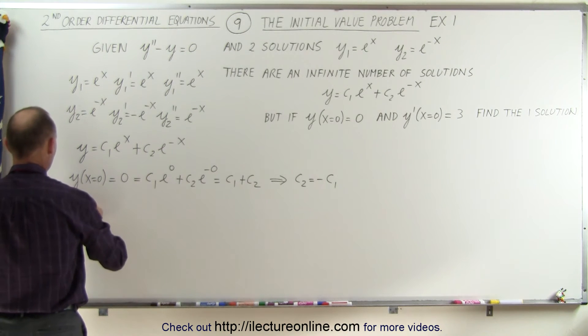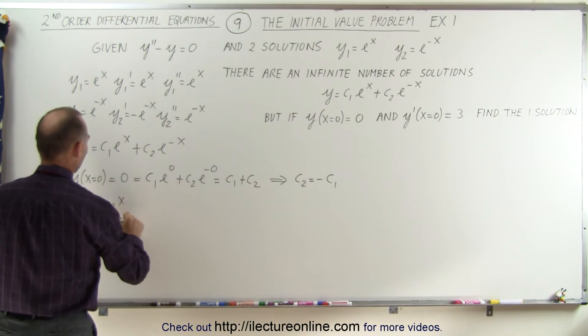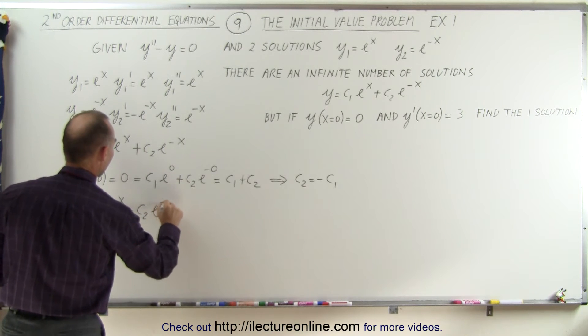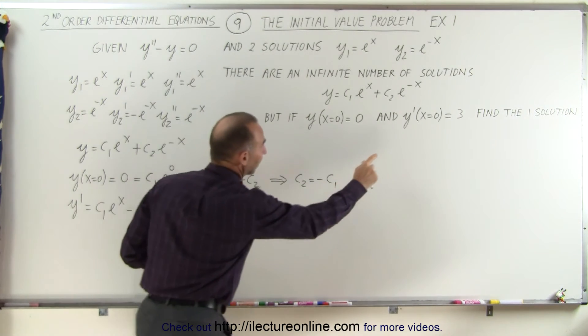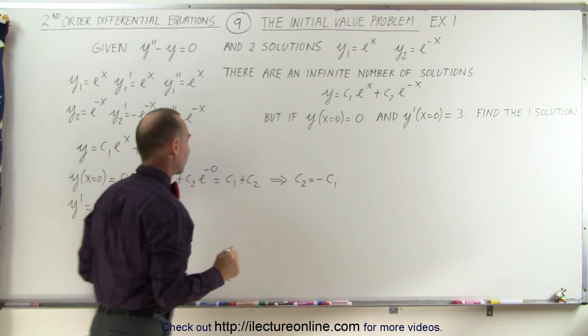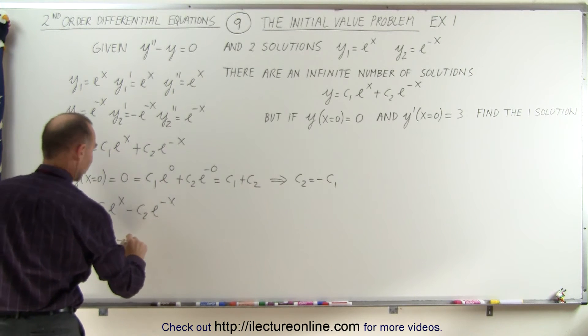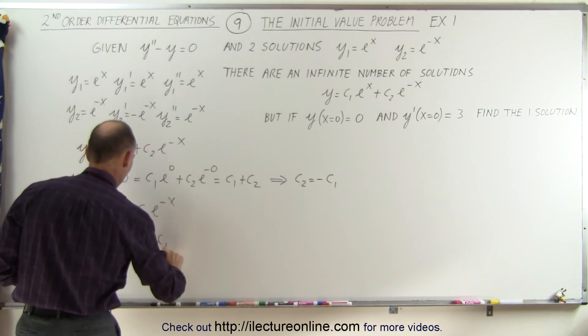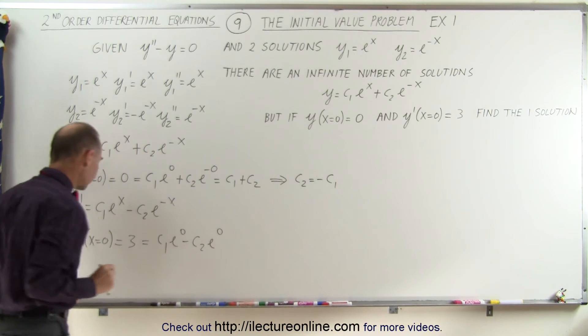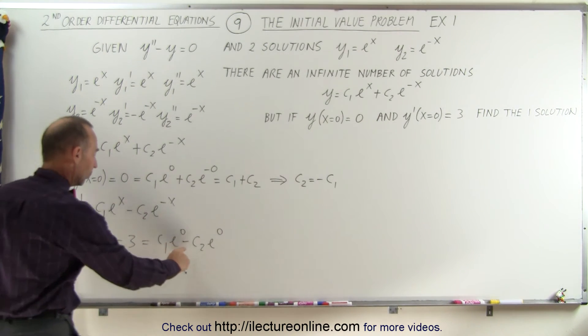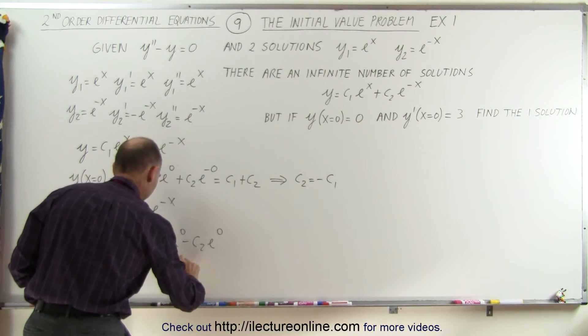So now we have to have y prime, which is going to be equal to the derivative of this, which is c1 e to the x minus c2 e to the minus x. So that's the first derivative of our original function. If I now plug in the value for 0 for x, I can set that equal to 3. So the first derivative, y prime, when x is equal to 0, is equal to 3, and that is equal to c1 e to the 0 minus c2 e to the 0. And of course, e to the 0 is equal to 1, so this becomes 3 is equal to c1 minus c2.